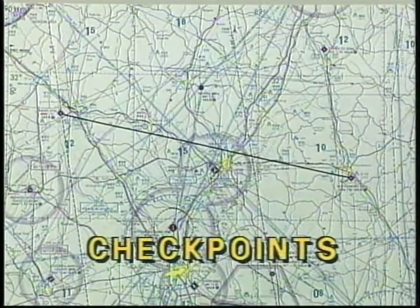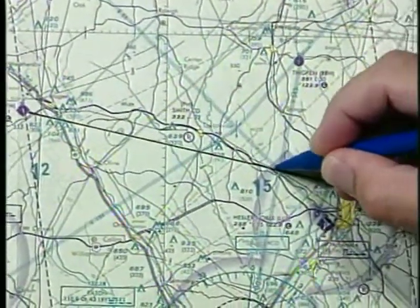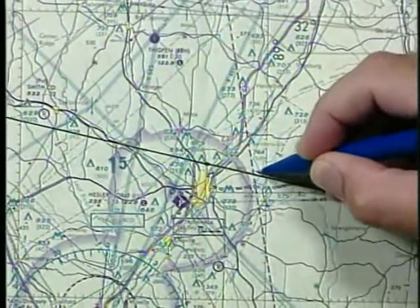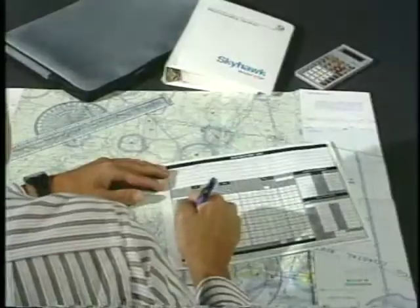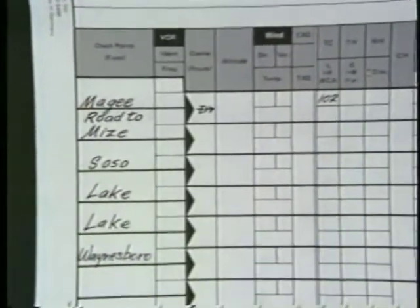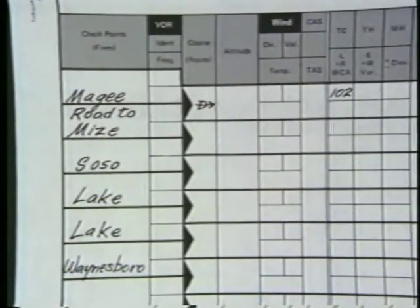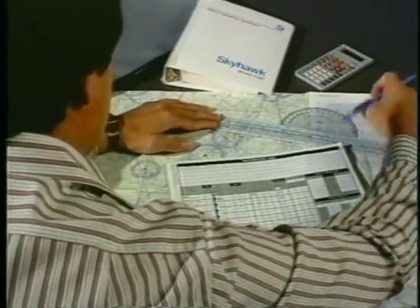Now that the course is plotted and measured, return to the actual chart and select checkpoints that will help you identify the course during the flight. The number of checkpoints depends on the length and complexity of the flight as well as the terrain. Each checkpoint should be clearly marked on the sectional chart and entered on a navigation log — an excellent tool for organizing all flight data. The information recorded so far includes the checkpoints, the route, the total distance, and the true course. The analysis of the route should also include measuring the distances between each checkpoint.